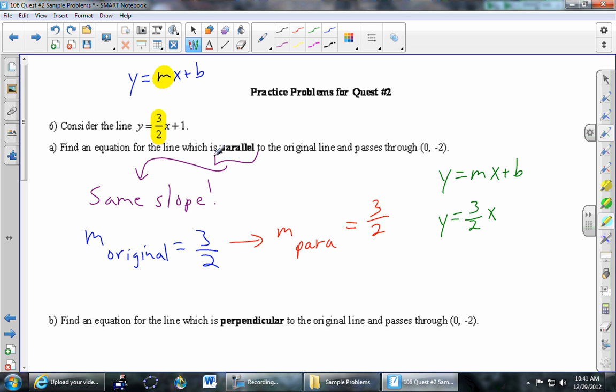Well, let's see. The line passes through the point 0, negative 2. Well, that right there is the y-intercept because the x is 0. So that negative 2 goes right here. And we've got our answer: y equals 3 halves x minus 2.